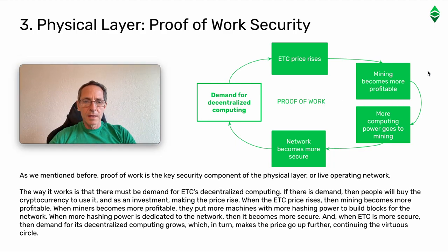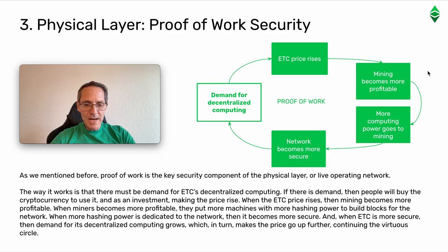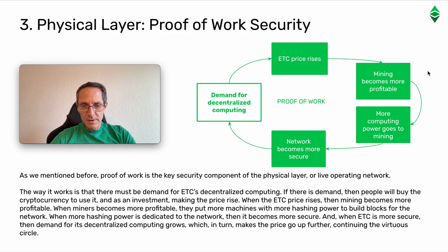Physical layer proof-of-work security. Proof-of-work is the key security component of the physical layer, or live operating network. The way it works is that there must be demand for ETC's decentralized computing. If there is demand, then people will buy the cryptocurrency to use it and as an investment, making the price rise. When the ETC price rises, mining becomes more profitable. When miners become more profitable, they put more machines with more hashing power to build blocks for the network. When more hashing power is dedicated to the network, it becomes more secure. And when ETC is more secure, demand for its decentralized computing grows, which in turn makes the price go up further, continuing the virtuous circle.